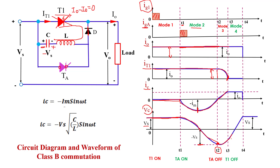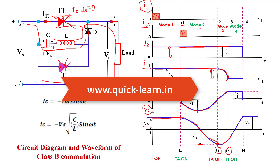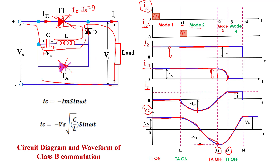Mode 4 starts from T3: both T1 and TA are off. Current flows from supply voltage through the capacitor, inductor, diode, and load, and back to supply voltage. The capacitor again charges to plus VS voltage — the left plate becomes positive and the right plate negative. Capacitor current equals I0 since the capacitor is directly connected to supply voltage. T1 thyristor current is zero. Output current remains I0. This completes the whole operation of Class B commutation.